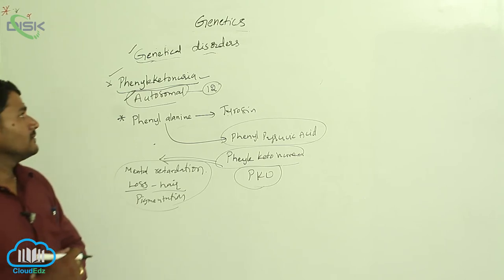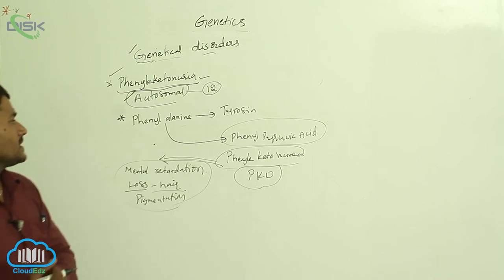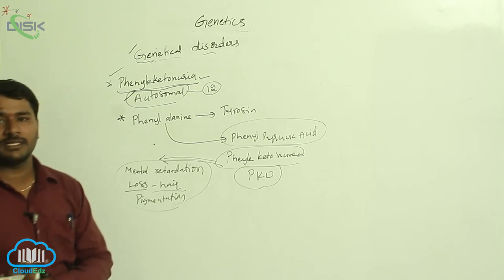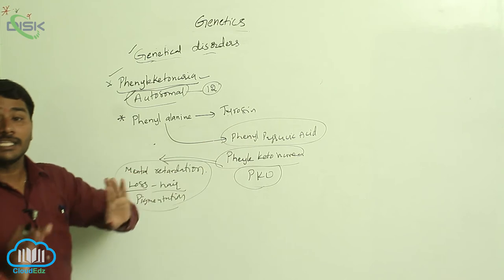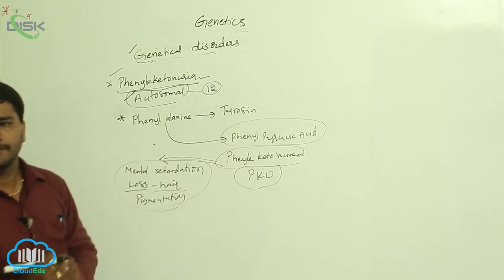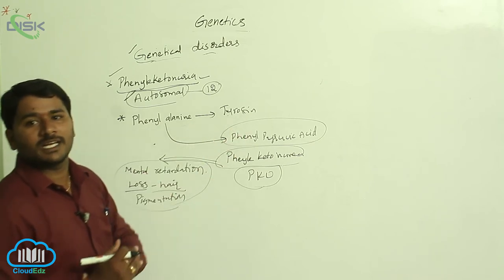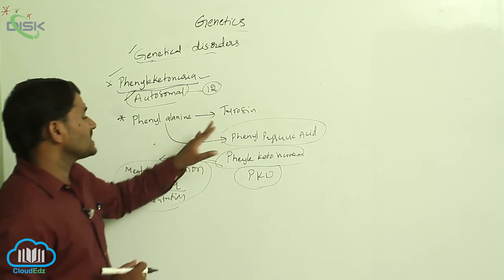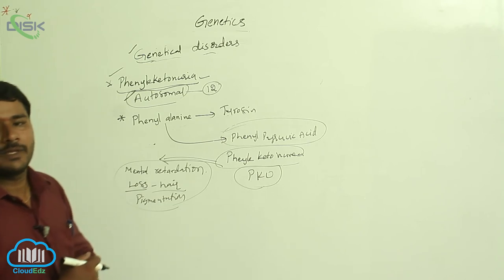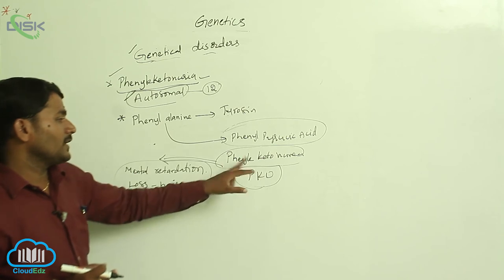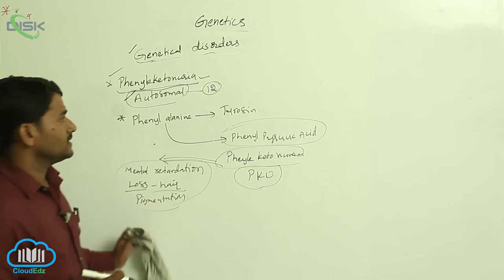Phenylketonuria is another genetic disorder — an autosomal disorder. In normal conditions, phenylalanine is converted into tyrosine amino acid in the presence of phenylalanine hydroxylase enzyme. When the enzyme is not produced due to mutations in the responsible gene, phenylalanine is converted into phenylpyruvic acid or phenylpyruvate, which accumulates in the body — causing phenylketonuria, which leads to mental retardation and loss of pigmentation.